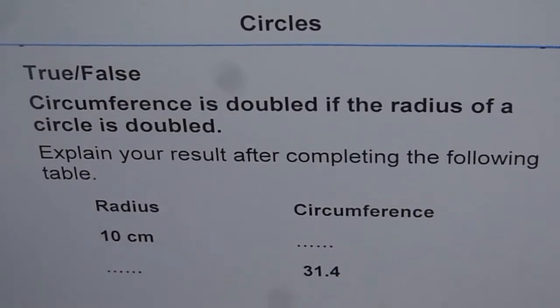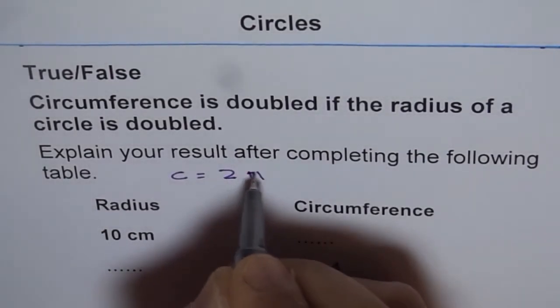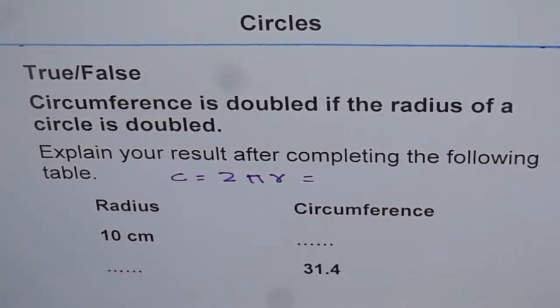Now, let me first start with the table. We are given a radius of 10 centimeters. What is going to be the circumference? As you know, circumference is 2 pi r. And what is pi equals to? Pi is 3.14.